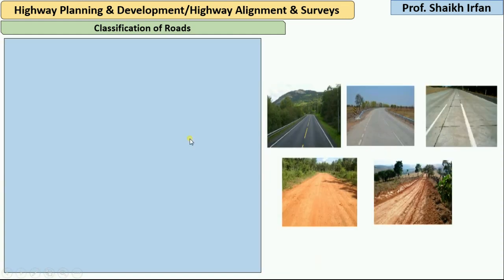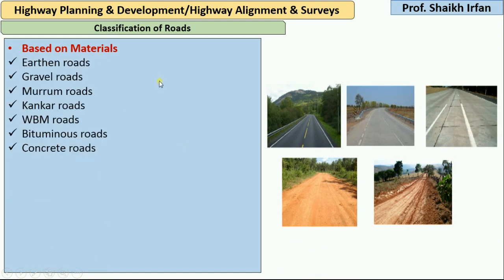So let's see how we can classify the roads depending upon the materials. Based on the materials used, we can classify the roads as: first, earthen road; then gravel road; murum road; conquer road; WBM road, that is water-bound macadam road; bituminous road; and concrete roads. These are the classifications of road based on materials.